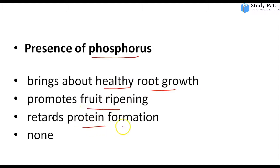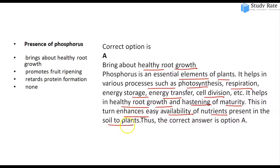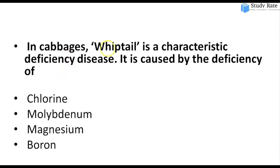Tenth question: Phosphorus is responsible for healthy root growth, fruit ripening, protein formation, and it is an essential element for various plant processes including photosynthesis, respiration, energy storage, energy transfer, and cell division.